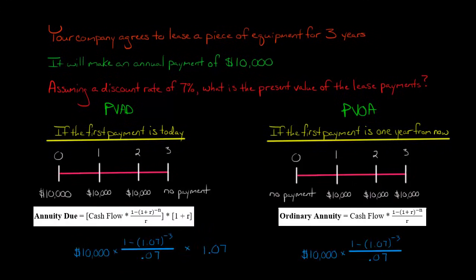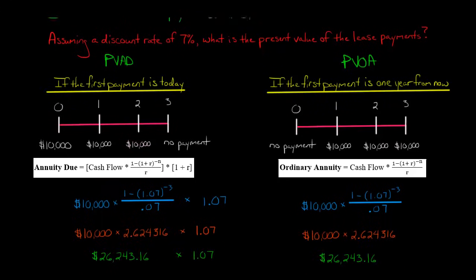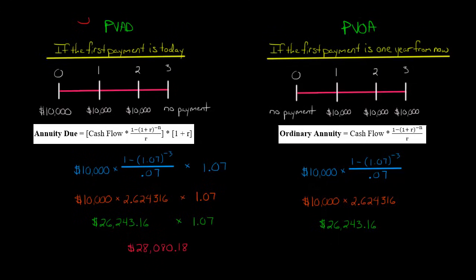I'm going to show you how to calculate these with the formulas. The only difference is that in each case we have the same base component, but with the annuity due we multiply by one plus R at the end, whereas we don't do that for the ordinary annuity. I've plugged in the numbers using our discount rate, number of periods, and so forth — I have another video covering that in detail. We can see that the times one plus R — in this case 1.07 — is multiplied by the base present value component.